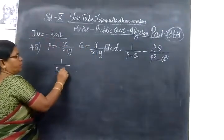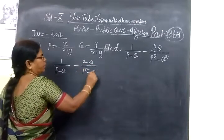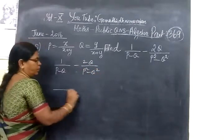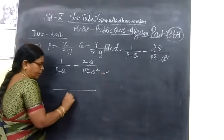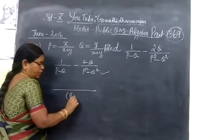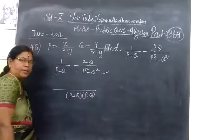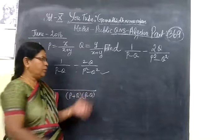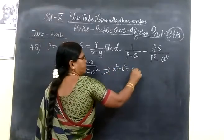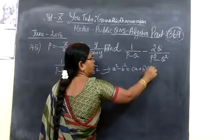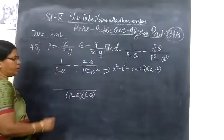The expression is 1/(P-Q) minus 2Q/(P²-Q²). As you see, P²-Q² can be written as (P+Q)(P-Q), since A²-B² equals (A+B)(A-B). So this is of the form A²-B², and can be written as (P+Q)(P-Q).